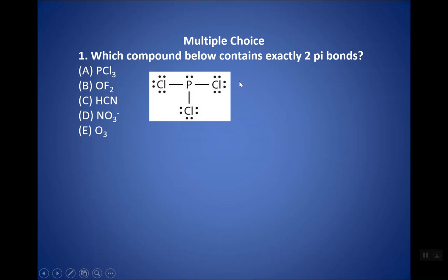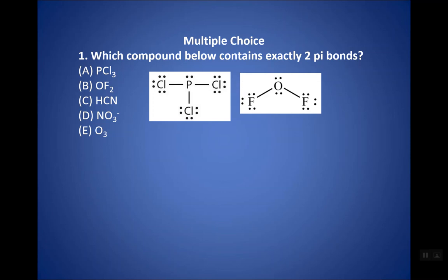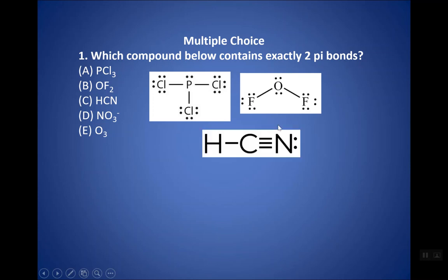PCl3 has no pi bonds whatsoever. OF2 also only has single bonds, so it would only have sigma bonds — two sigma, not two pi. If I look at HCN, the triple bond contains one sigma and two pi, so this does have two pi. Overall, HCN has two sigma and two pi. So the answer is C.